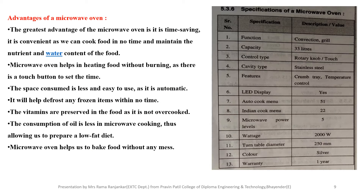Advantages of microwave oven: The greatest advantage is time saving. It is convenient as we can put the food in quickly and maintain the nutrient and water content of the food. The microwave oven helps in heating food without burning as there is a touch button to set the timer. The space consumed is less and it is easy to use as it is automatic. It will help to defrost any frozen items within the time. The vitamins are preserved in the food as it is not overcooked.